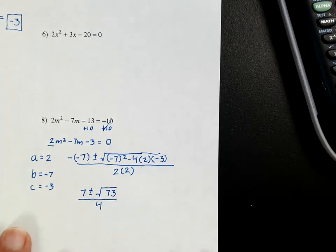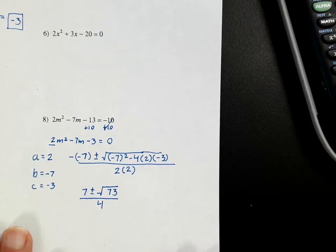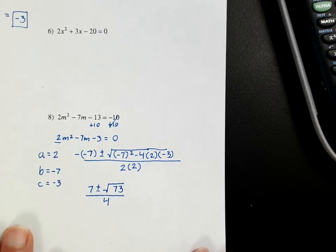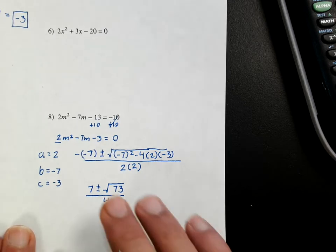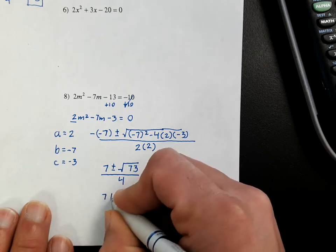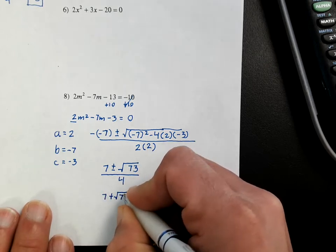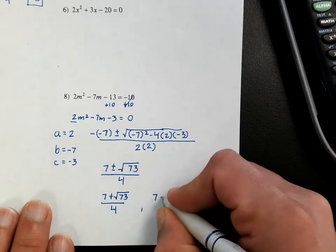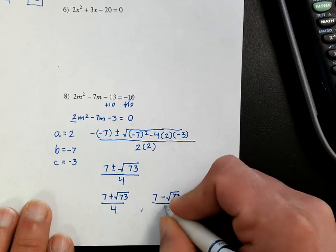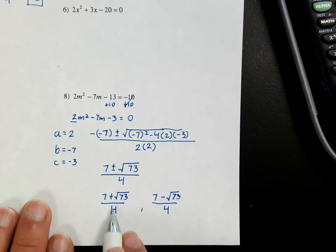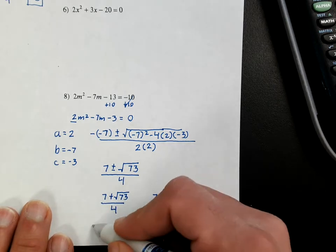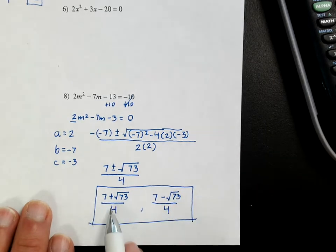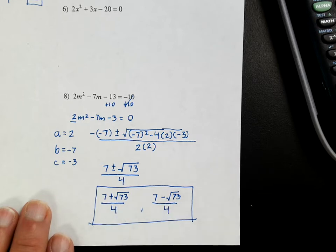If you look at 73, it doesn't have any useful factors — you can't split them up — so this is actually the answer. I'd like you to write it like this, or at least have in your head that you have one answer with the positive and another answer with the negative. So you have two answers: one with the positive and one with the negative. As scary as that may look, these two are just numeric values — this is where the function crosses the x-axis, and this is where it crosses the x-axis also.